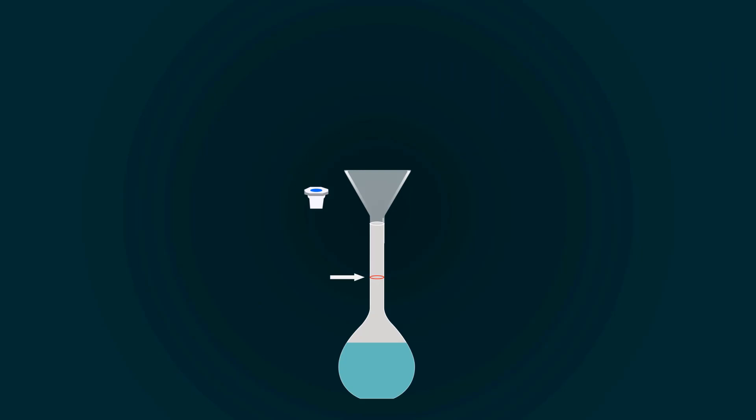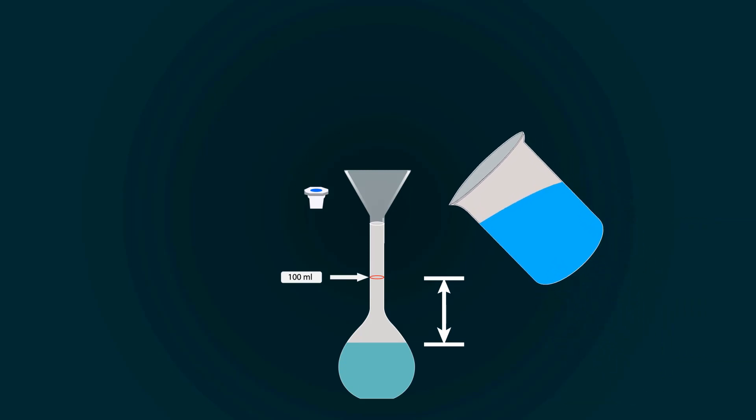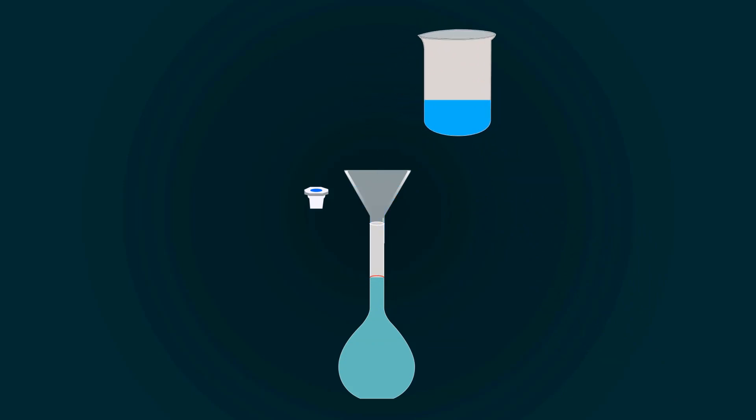You have to fill the volumetric flask up to the 100 milliliters point. For that, you have to add more distilled water. So, take more distilled water into an empty beaker and start pouring it into the volumetric flask.